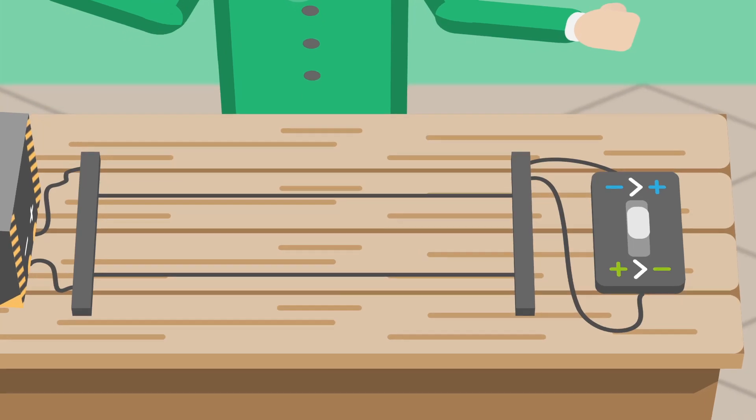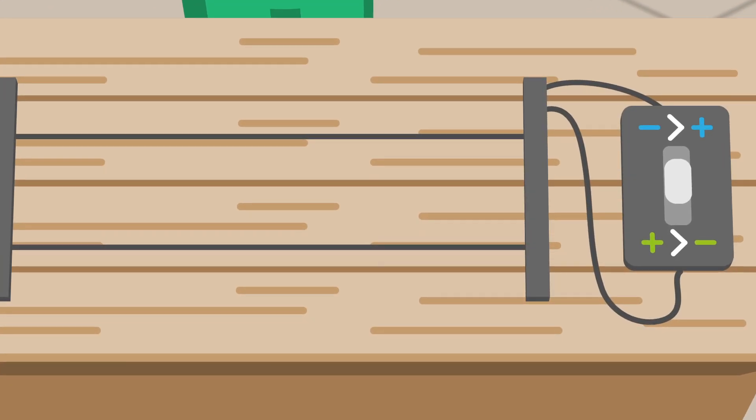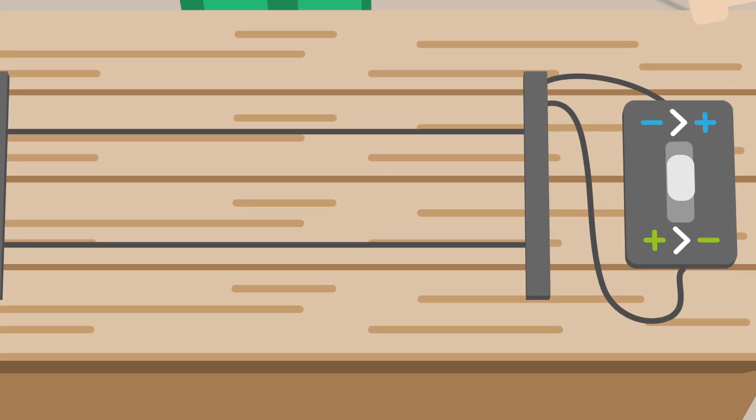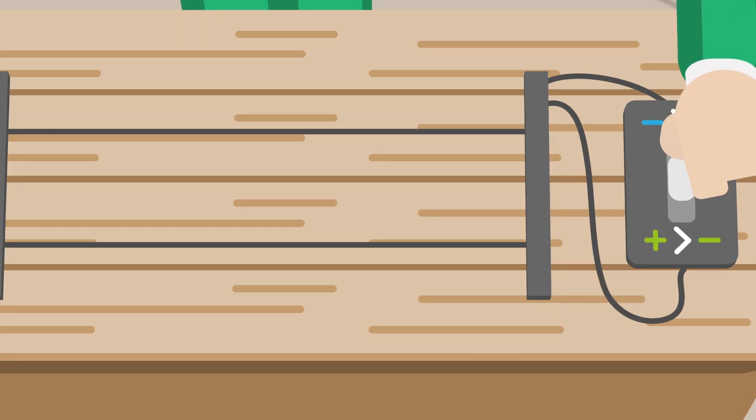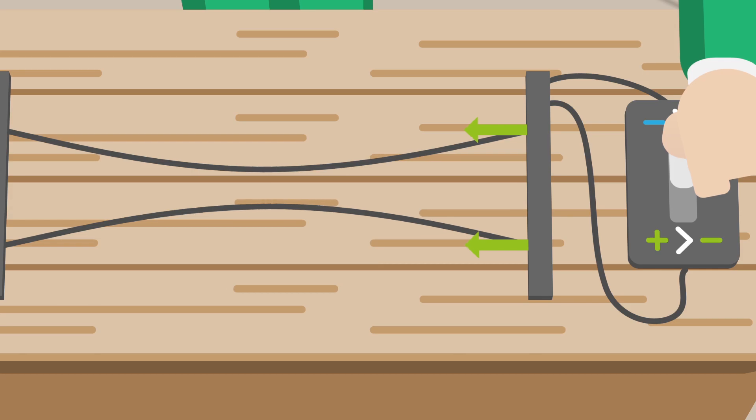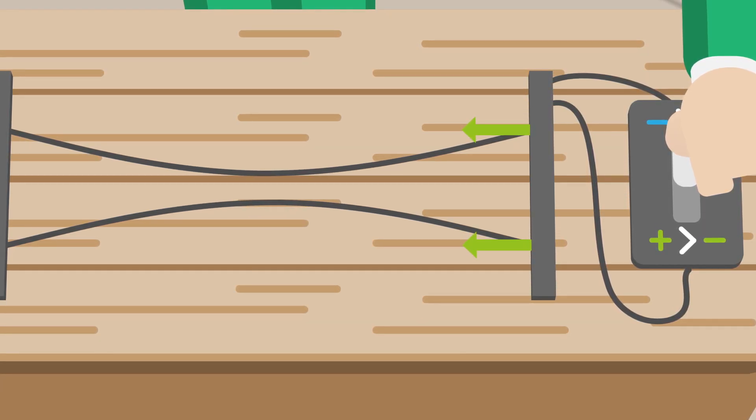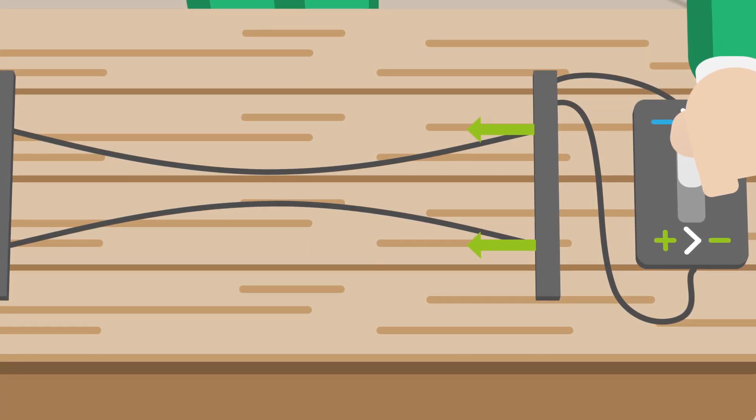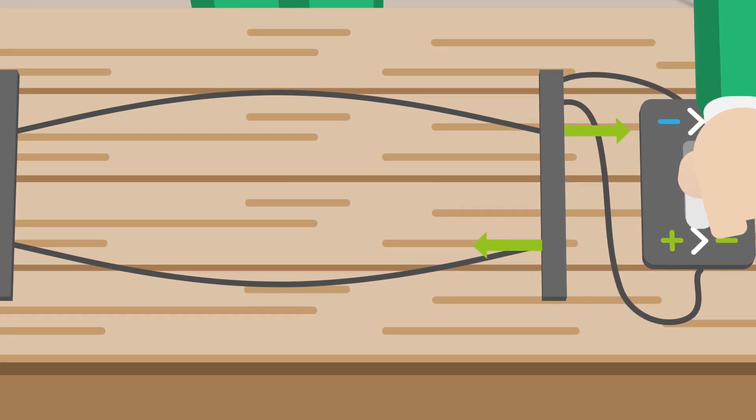He placed two copper wires in parallel, let an electric current flow through the wires, and discovered that the wires move towards each other when both currents flow in the same direction, and move away from each other when the currents flow in opposite directions.